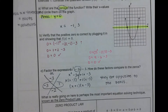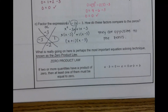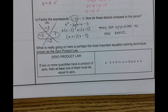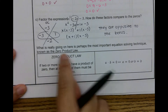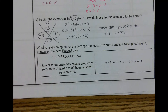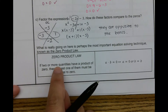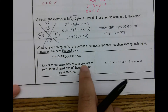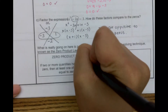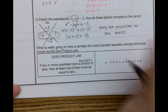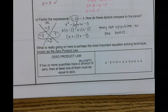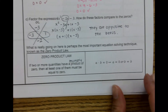So what is really going on here is perhaps the most important equation-solving technique — the zero product law. You use this a lot in Algebra 2 and beyond. What it means is that if you have two or more quantities that have a product — they multiply — and you get zero, then at least one of the things you're multiplying has to be equal to zero.